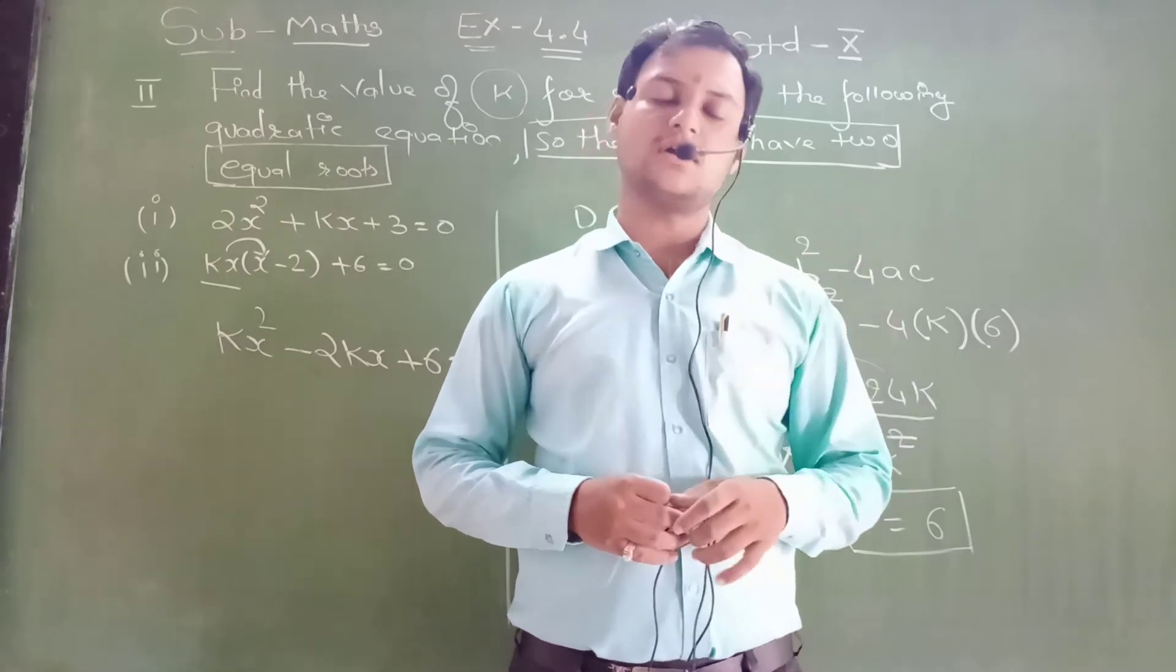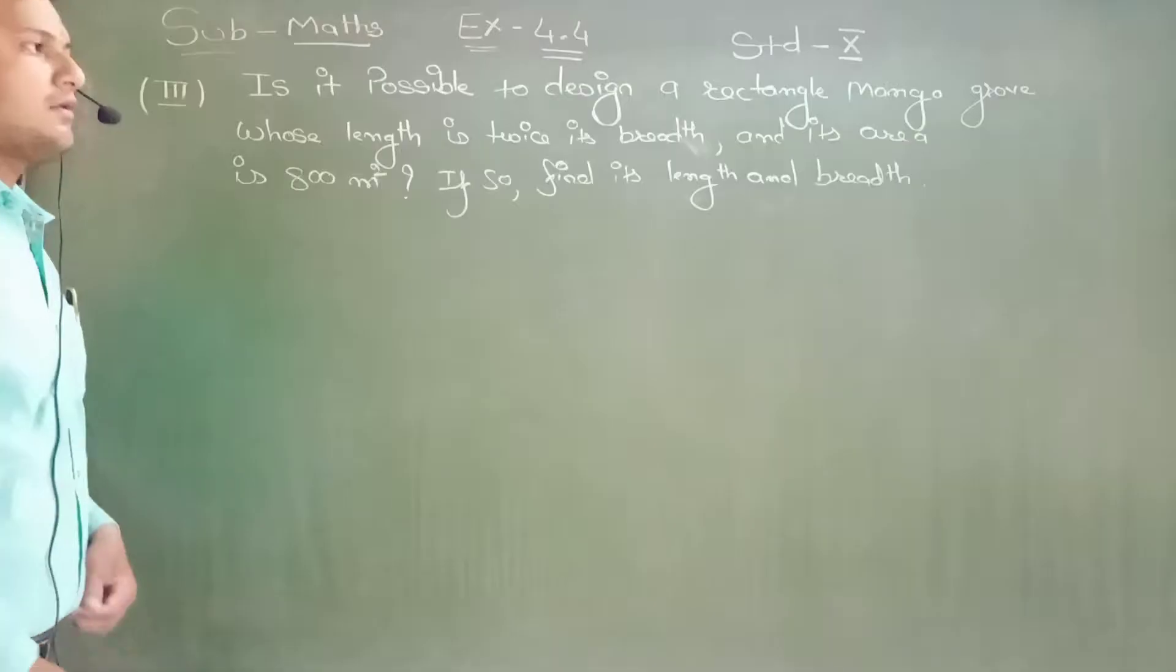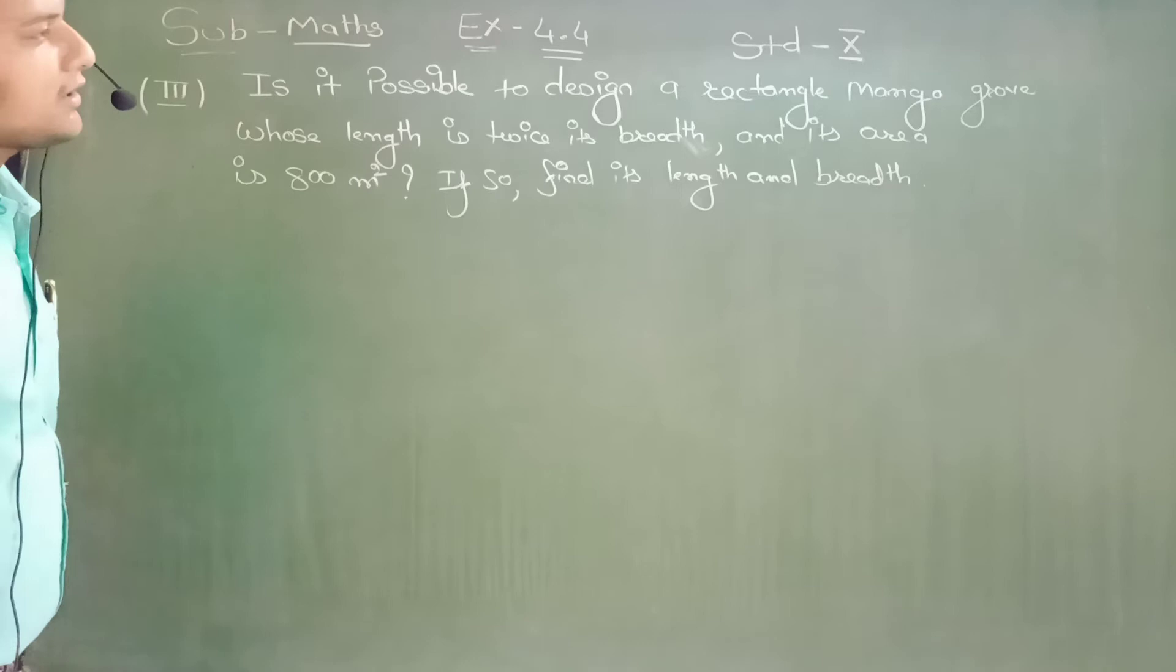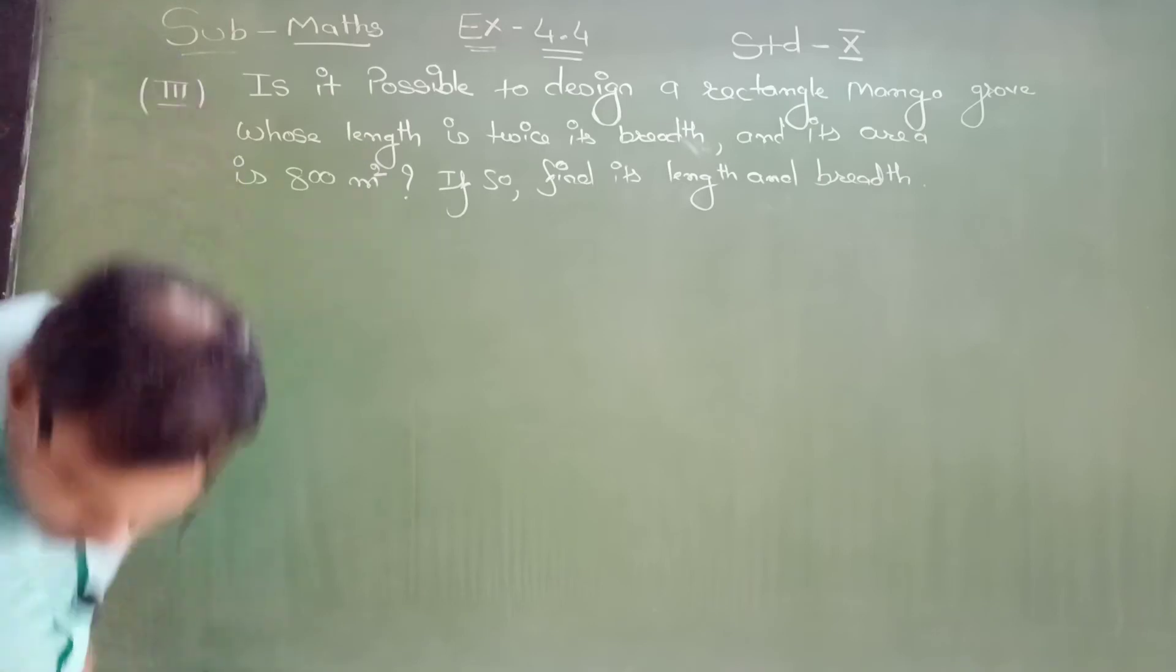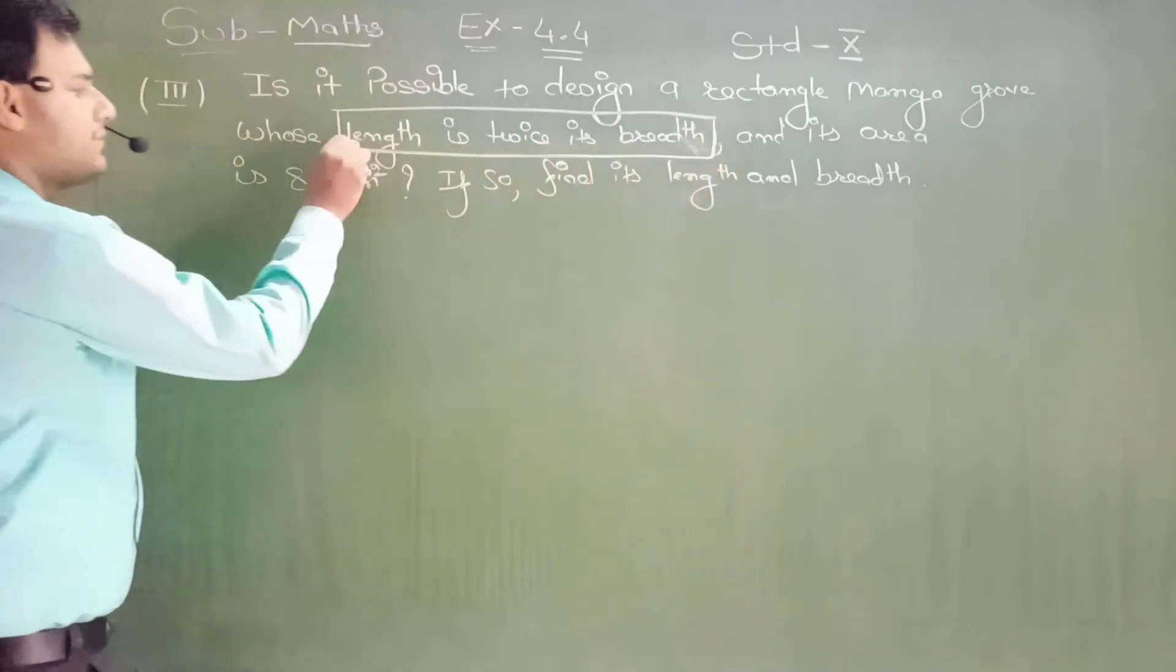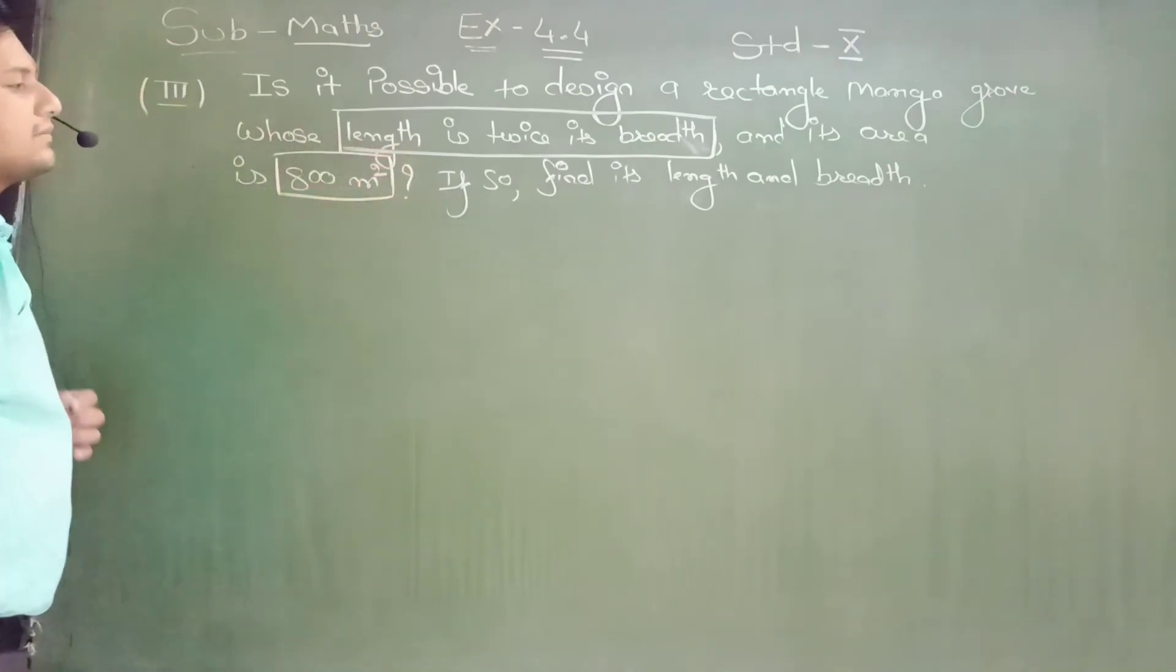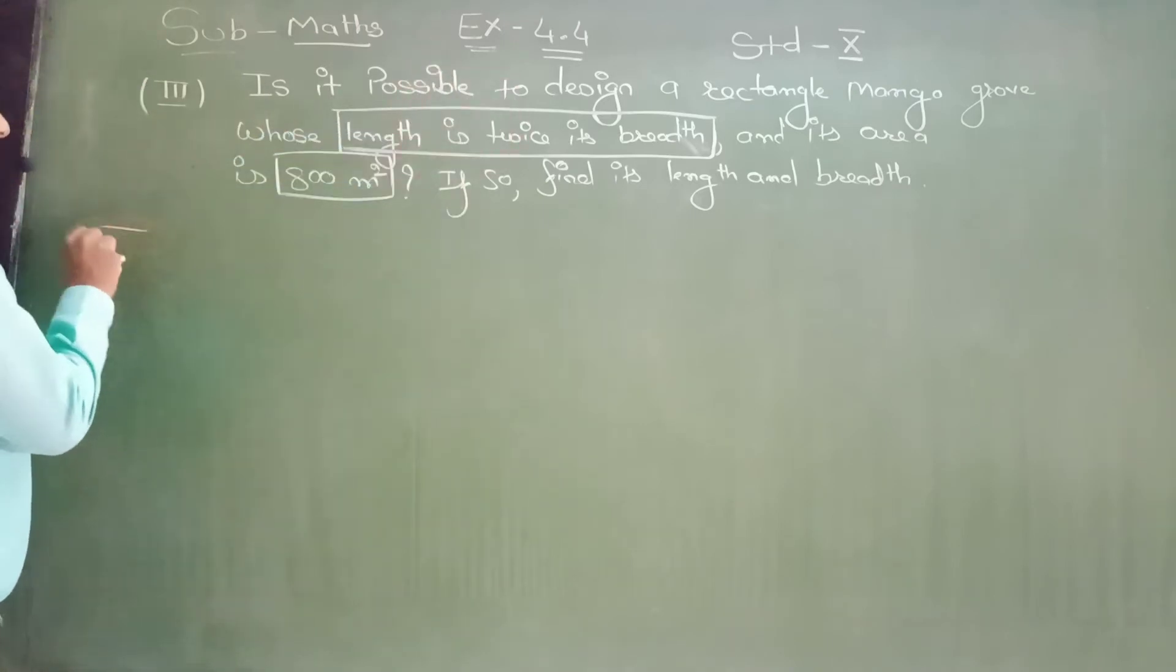I hope, dear students, you are able to understand exercise 4.4. This was second roman, dear students. Now we will move towards the third roman. Please pay attention. Okay, now we are going to start third roman. Students have written the question. Is it possible to design a rectangular mango grove whose length is twice its breadth, and its area is 800 meter square?